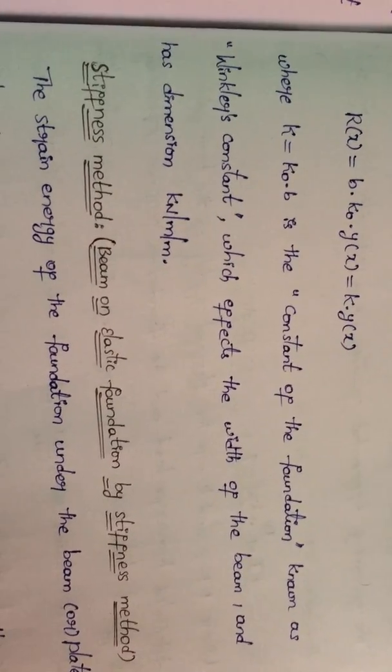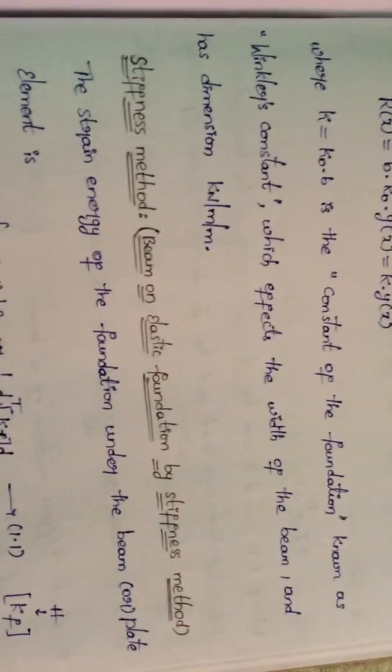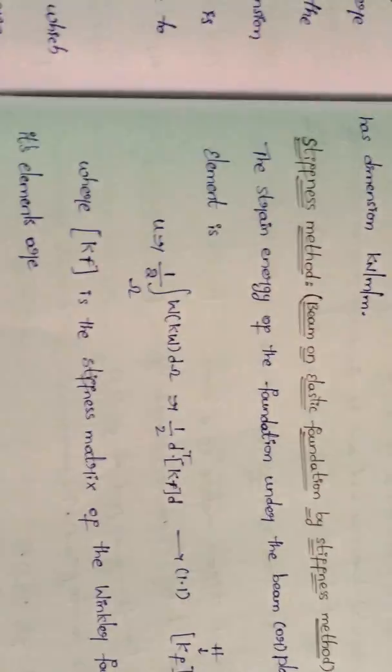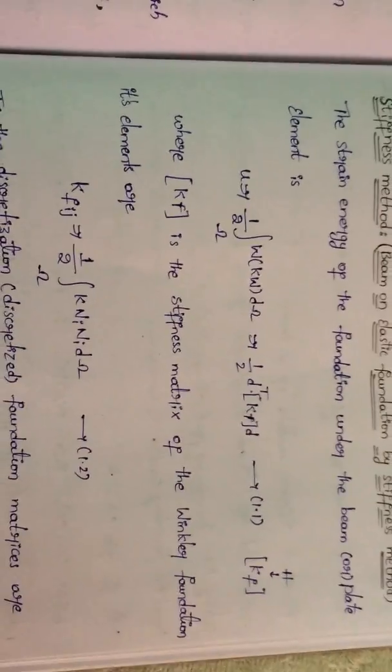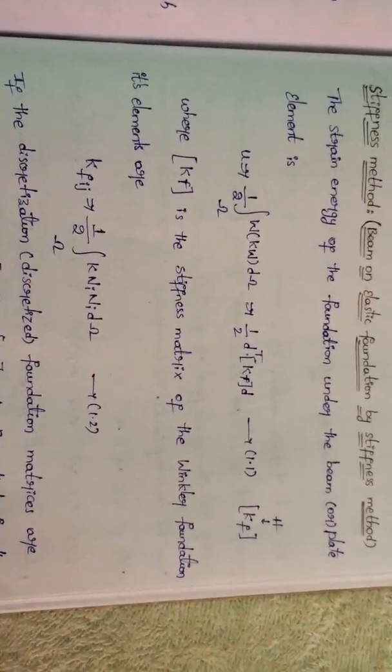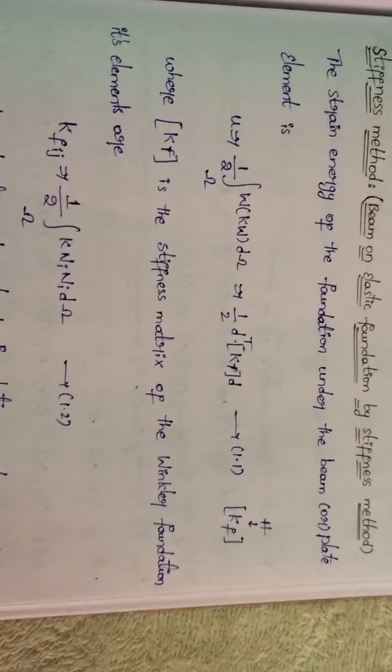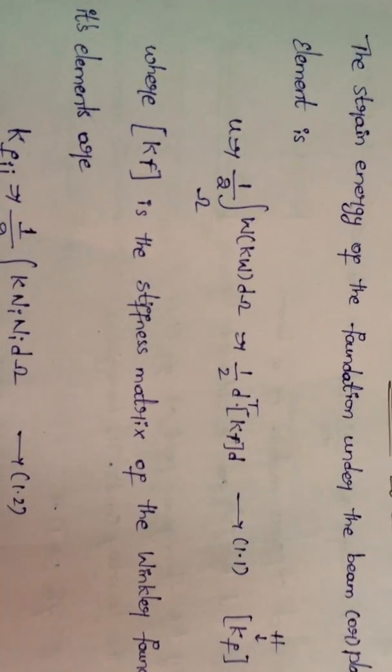Stiffness method - beam on elastic foundation by stiffness method. The strain energy of the foundation under the beam or plate element is given by U equal to half into integral of w into k w into d omega.